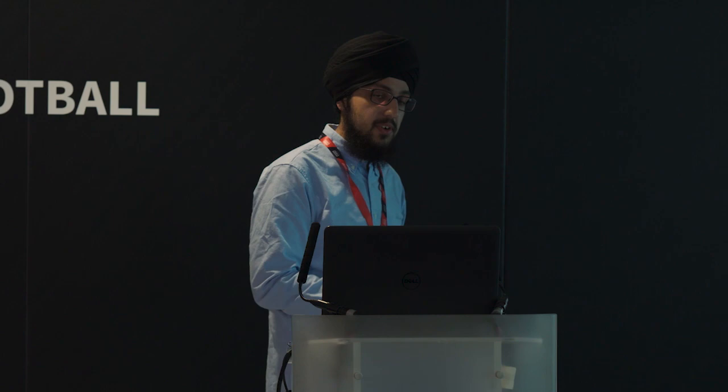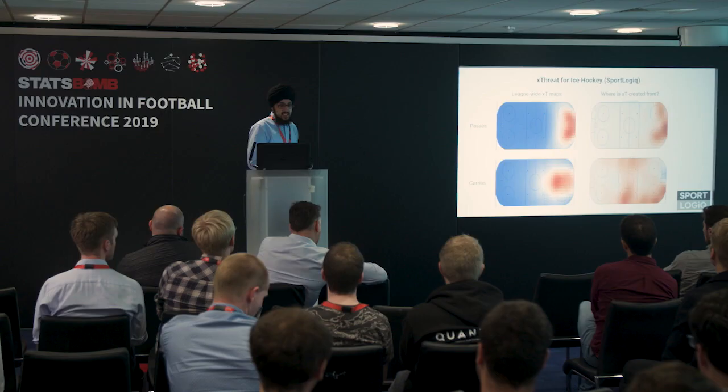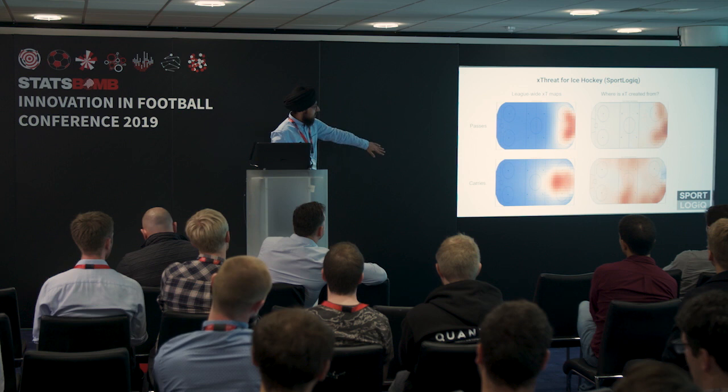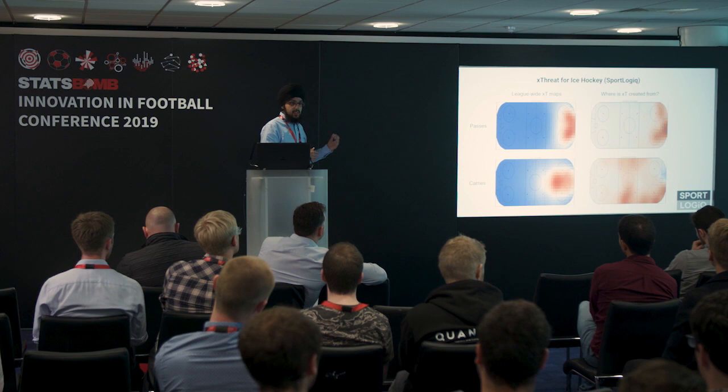One really cool thing is that people have been mapping expected threat over to ice hockey. Sport Logiq over in Canada recently built the same kind of model. They have one difference where they build separate models for passes and carries because apparently they're very different in ice hockey functionally. They also found that you can pass from behind the goal and it's supposedly very valuable in ice hockey. This shows the XT map for passes and carries for the whole league, and the XT created map showing where one particular player creates XT from.